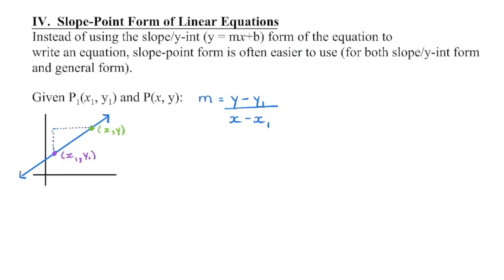I'm going to take a point that I know on my line, and I'm going to call this my first x-coordinate and my first y-coordinate — so this is x1, y1 — and then I'm going to use x, y to represent any point on that line. It could be here, here, or here. Any point on this line can be represented with an x-coordinate and a y-coordinate.